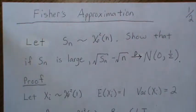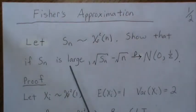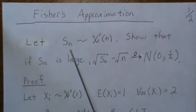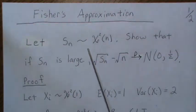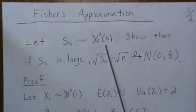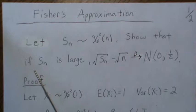Hello, in this video we're going to look at something called Fisher's approximation. Essentially, if we have a chi-square random variable S_n with n degrees of freedom, we want to show that if S_n is large, this difference is approximately normal with zero mean and one-half variance.